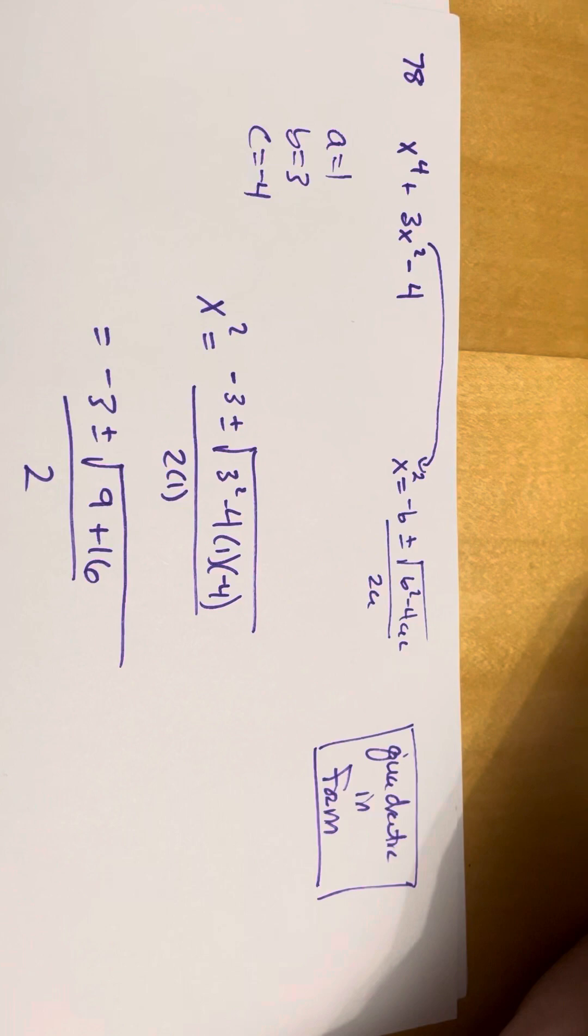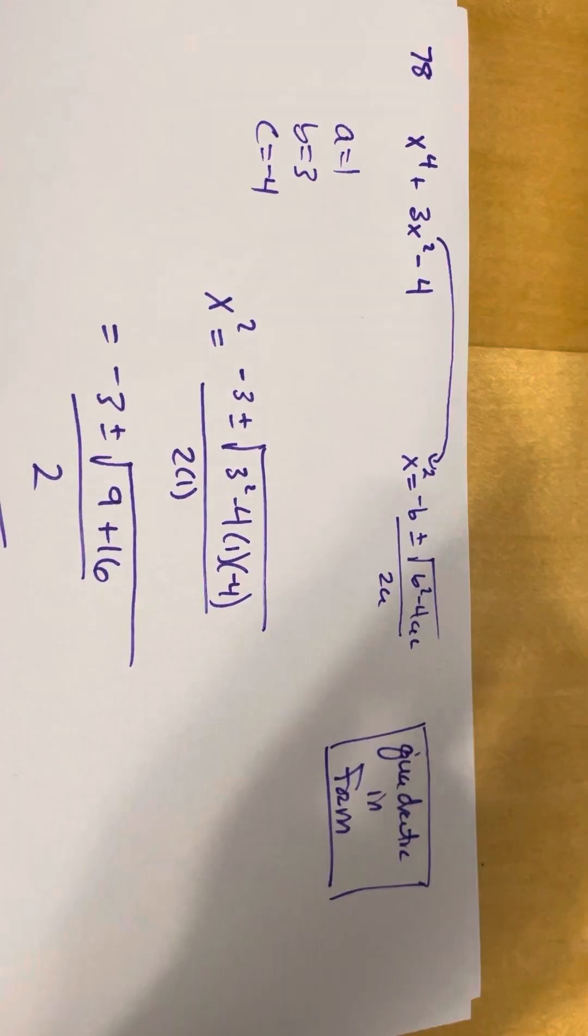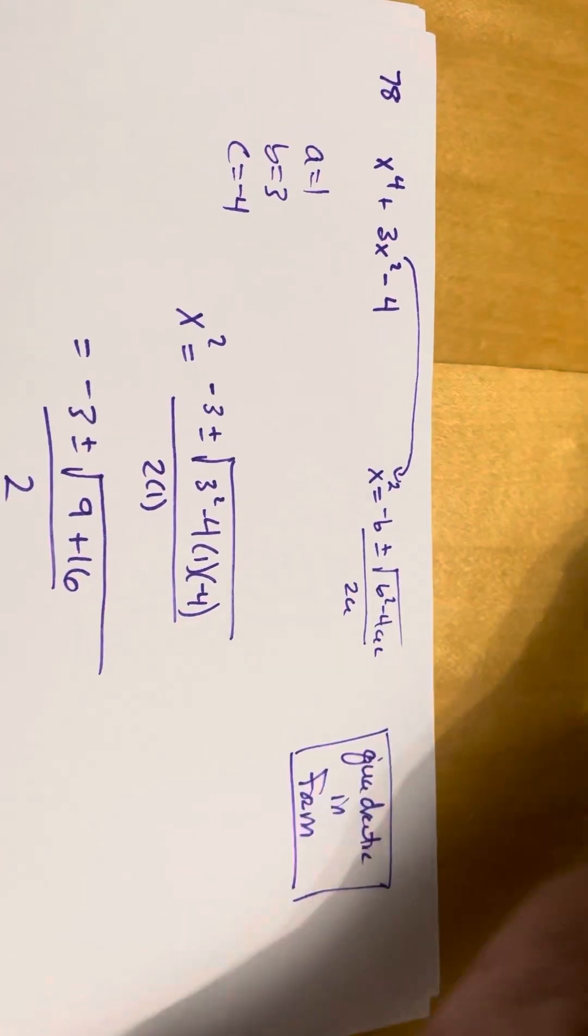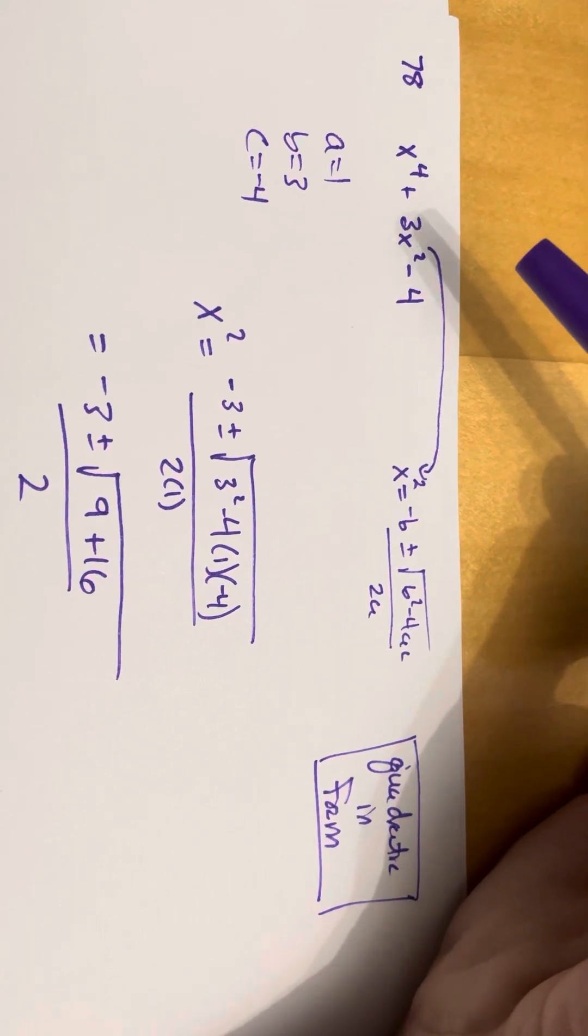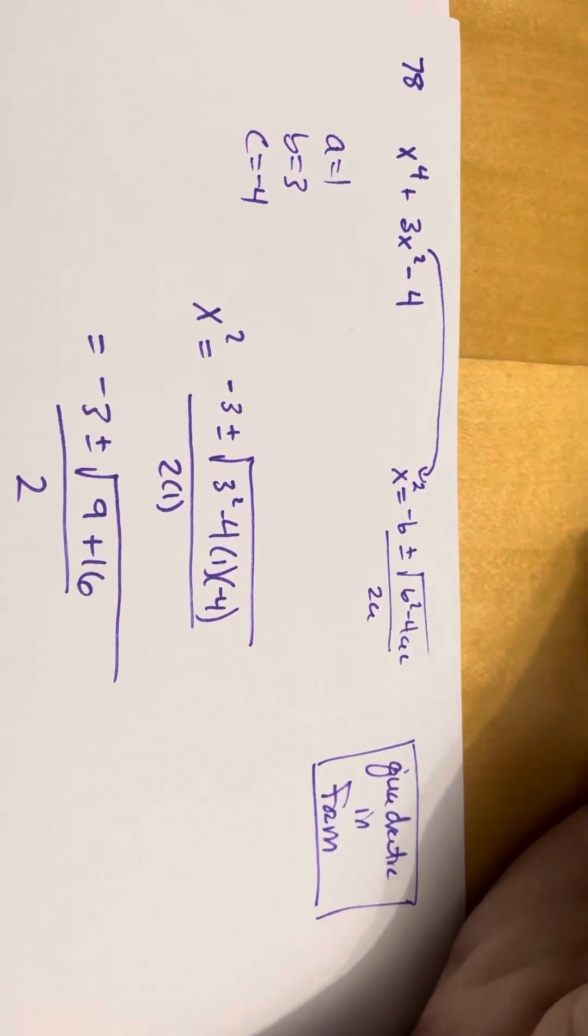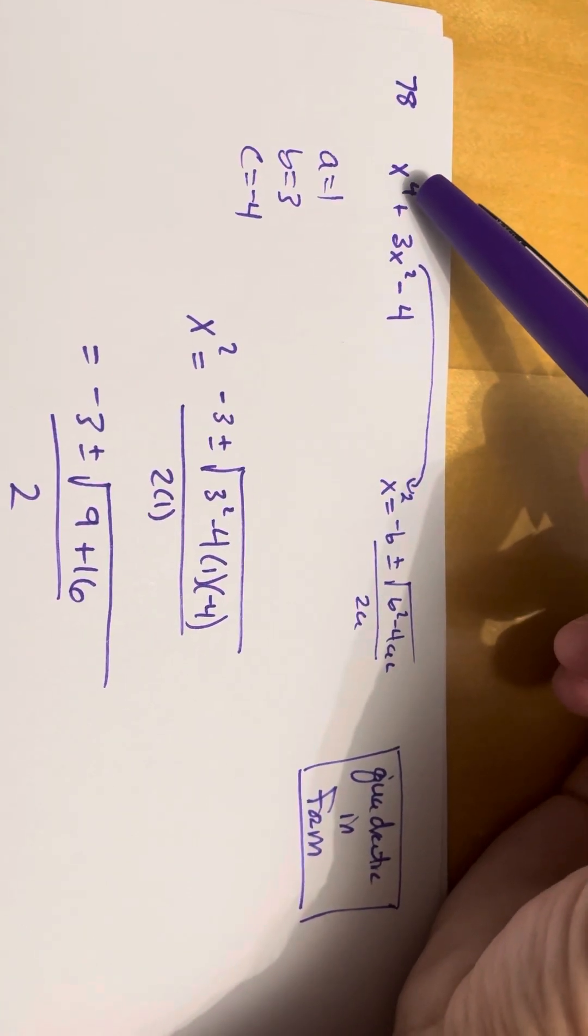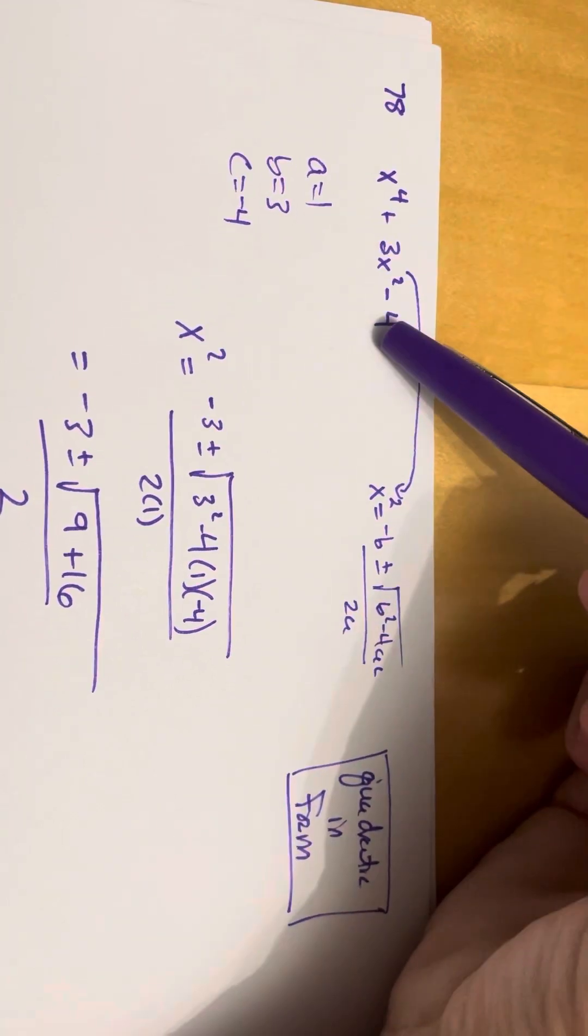It's not a quadratic, but it's actually a quadratic in form. And if you graph it, it looks almost like a quadratic, but it's not quite the same. So, the way you can tell something's quadratic in form is that the variable, the exponent here is twice the exponent here, and you have three terms.